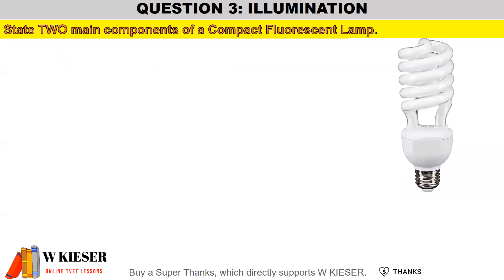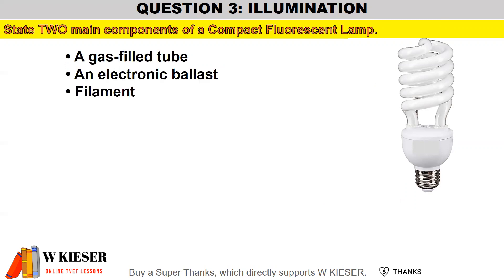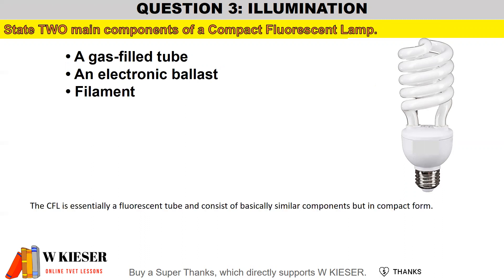State two main components of a compact fluorescent lamp. The components are a gas-filled tube and an electronic ballast. The compact fluorescent lamp is essentially a fluorescent tube and consists of basically similar components but in compact form.